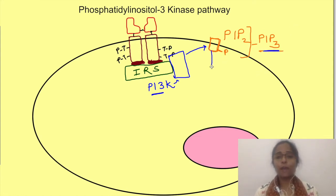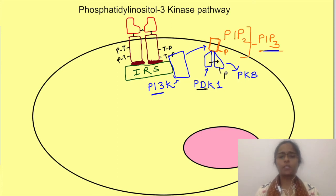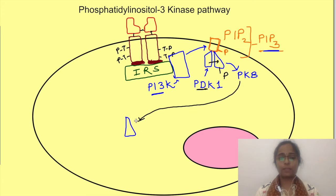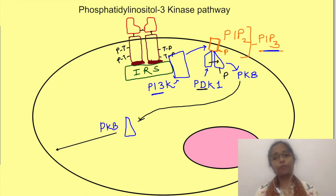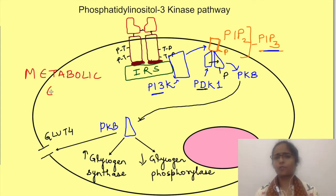PIP3 acts as a docking site for two other kinases: phosphoinositide-dependent kinase 1 (PDK1) and protein kinase B (PKB/AKT). PDK1 phosphorylates protein kinase B, also known as AKT, thus activating it. Protein kinase B then dissociates and moves into the cytoplasm, where it causes insertion of GLUT receptors on the membrane, activates glycogen synthase for conversion of glucose to glycogen, and inactivates glycogen phosphorylase to prevent glycogenolysis — thereby producing the varied metabolic effects of insulin.